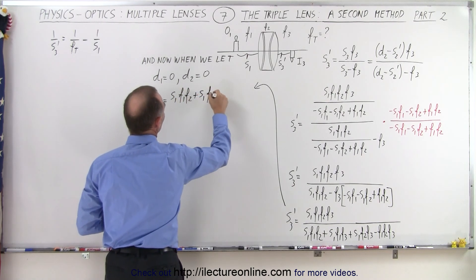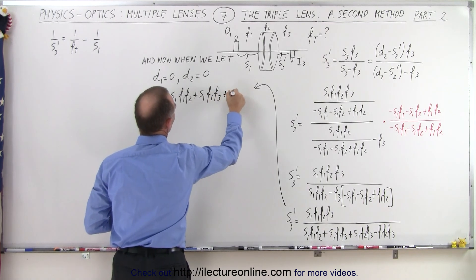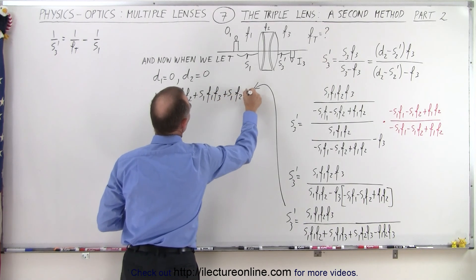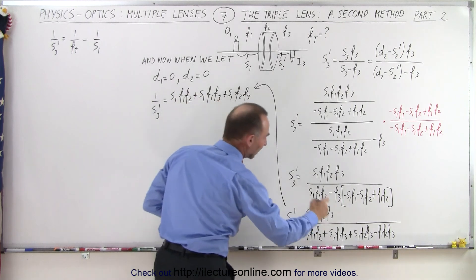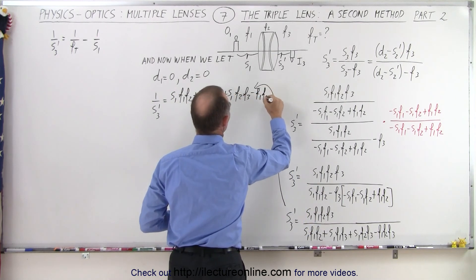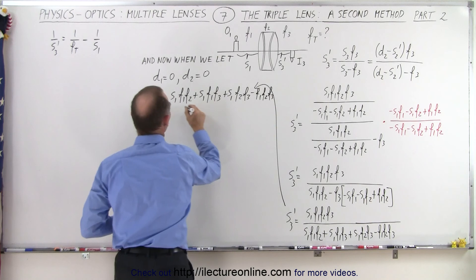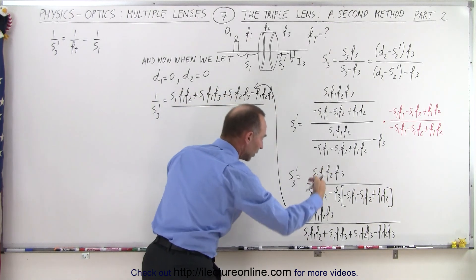So this becomes s1 f1 f2 plus s1 f1 f3 plus s1 f2 f3, and then finally minus f1 f2 and f3, all divided by what's now in the denominator, which is s1 times s1.